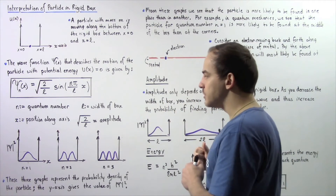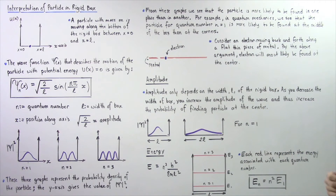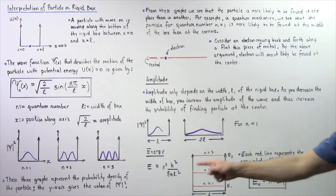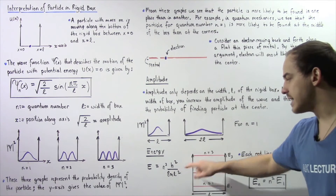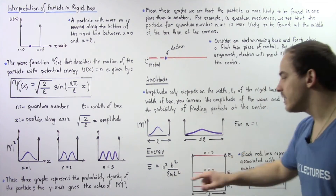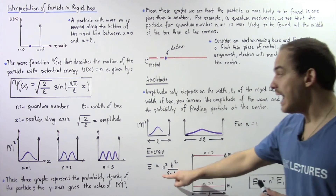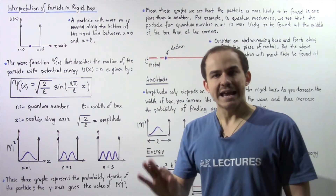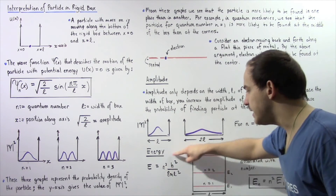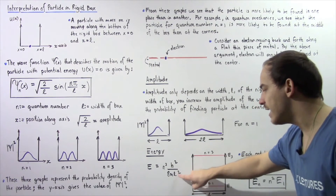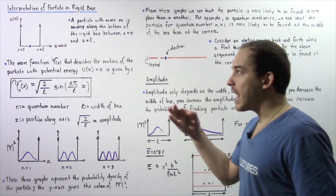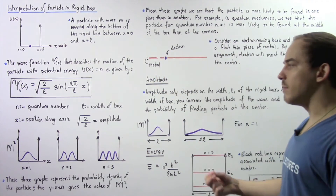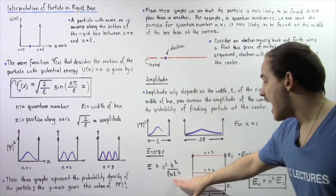Moving on to energy: E equals n squared times h squared divided by 8mL squared, where L is the width, m is the mass, h is Planck's constant, and n is the quantum number. For any box with a fixed L value, the quantity h squared divided by 8mL squared is a constant. Therefore, the energy of the particle for any given quantum number only depends on n as long as L is fixed.